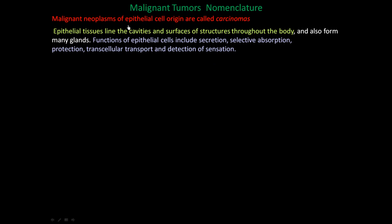Malignant neoplasms of epithelial cell origin are called carcinomas, which is different from sarcomas. Epithelial tissues line the cavities and surfaces of structures throughout the body and also form many glands. The functions of epithelial cells include secretion, selective absorption, protection, transcellular transport, and detection of sensation. If you have a malignant tumor originating from any epithelial cell or epithelial tissue, you call it a carcinoma.